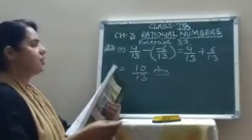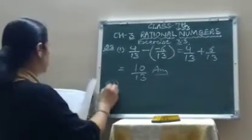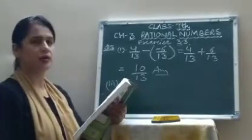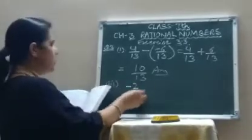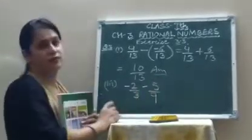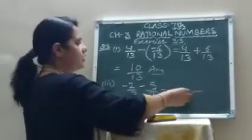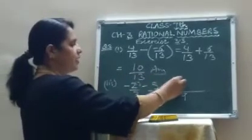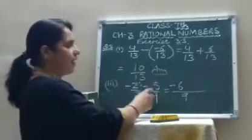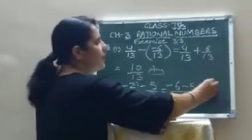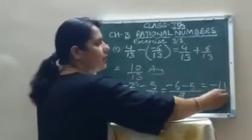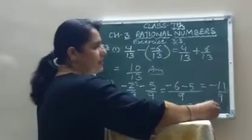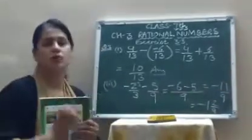Similarly, part 3: subtract 5 upon 9 from minus 2 upon 3. Write it as minus 2 upon 3 minus 5 upon 9. The LCM of 3 and 9 is 9. 3 threes are 9, so minus 2 into 3 becomes minus 6. 9 ones are 9, so 5 ones are 5. It becomes minus 6 minus 5 equals minus 11 upon 9, which is minus 1 whole number 2 upon 9.